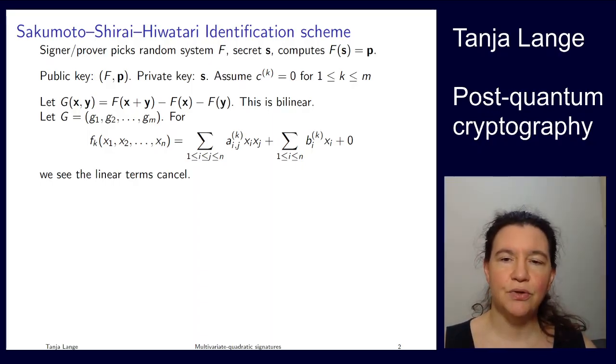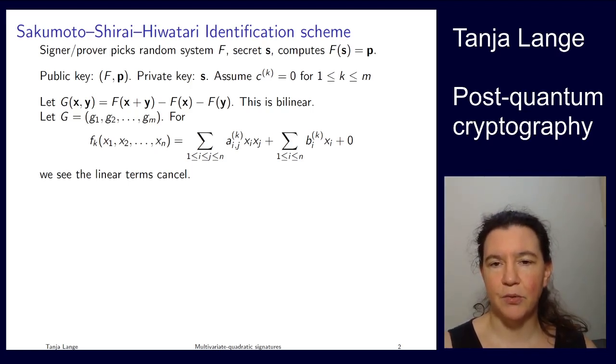So in the second lecture, I'll show you how to turn the non-structured multivariate quadratic system of equations into an identification scheme. And once we have an identification scheme, how to turn this into a signature system. Signature systems are something you're familiar with, identification schemes we haven't seen yet, so let me spend a few moments on explaining this.